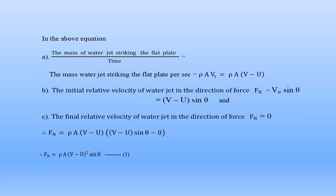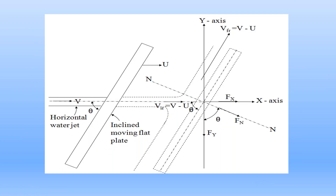From the diagram, the angle between the normal force FN and force Fx (along x-axis) is (90 − theta), and the angle between normal force FN and force Fy (along y-axis) is theta. Therefore Fx = FN·cos(90 − theta) = FN·sin(theta), and Fy = FN·cos(theta).